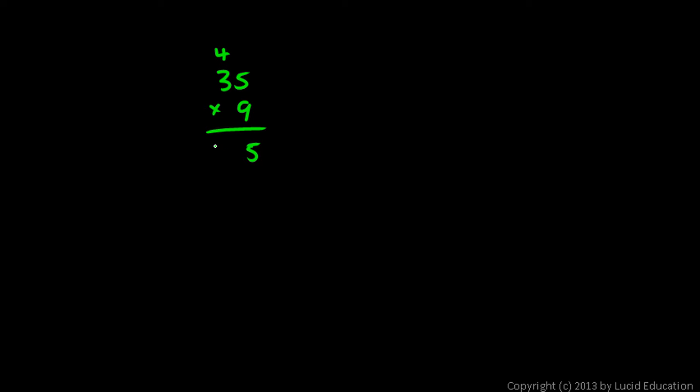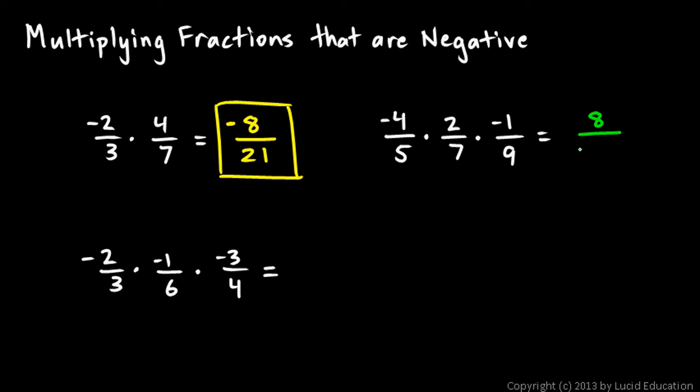So, that's 315. This is 8 over 315, and that doesn't simplify any further.